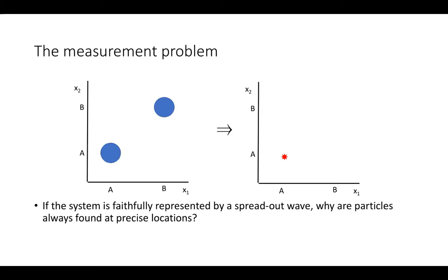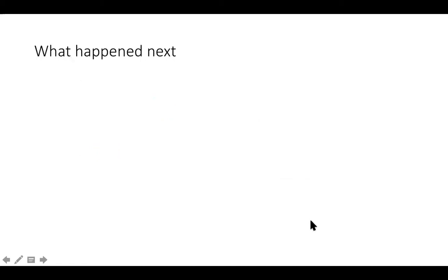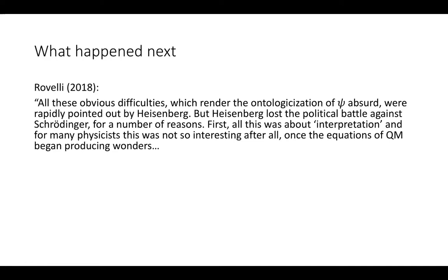That's the dimension problem. As for the measurement problem: if the system is faithfully represented by a spread-out wave, why are particles always found at precise locations? If the state of the pair of particles in six-dimensional space is this spread-out thing, when you look for the particles you will always find them at some precise location.